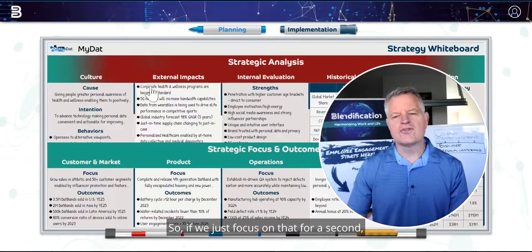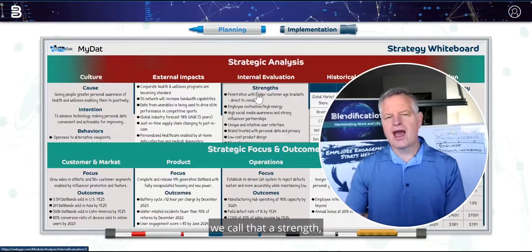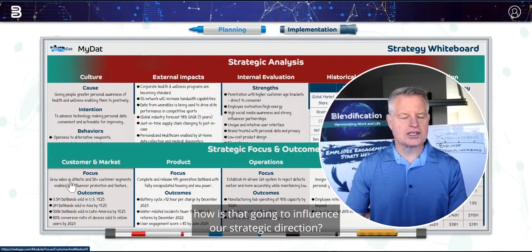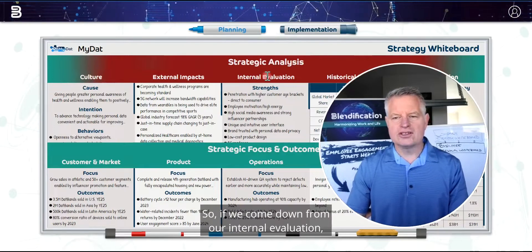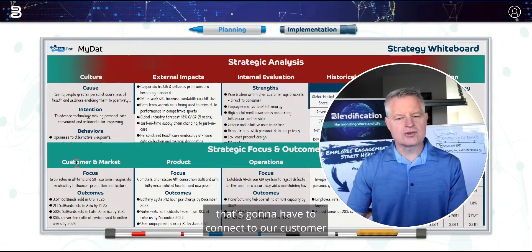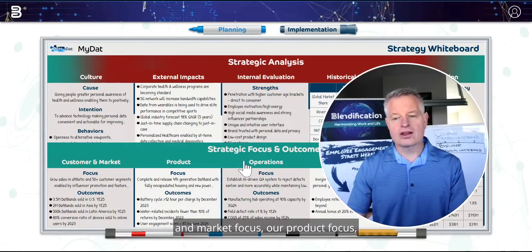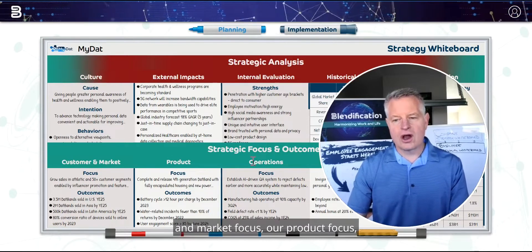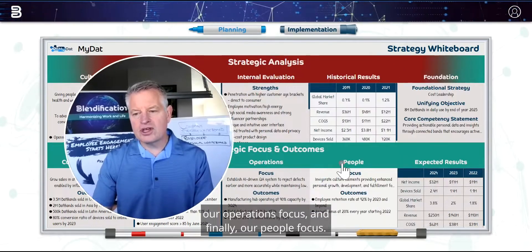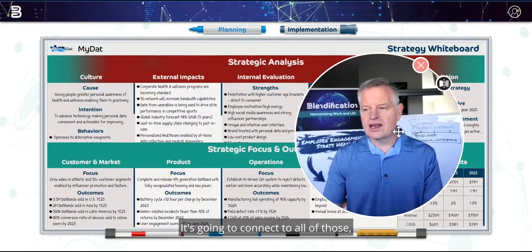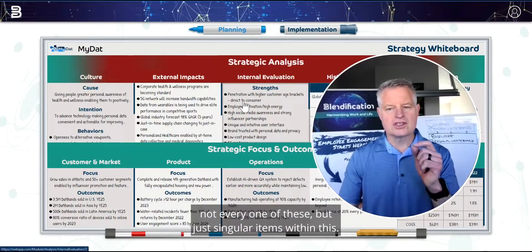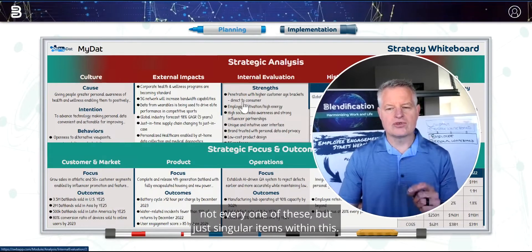So if we just focus on that for a second, we call that a strength. How is that going to influence our strategic direction? If we come down from our internal evaluation, that's going to have to connect to our customer and market focus, our product focus, our operations focus, and finally, our people focus — it's going to connect to all of those, but just singular items within each.